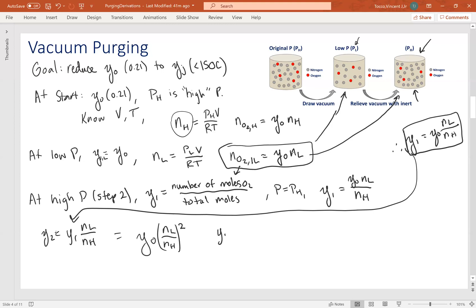We could then calculate that Yj, which is the oxygen concentration after J cycles, is equal to the initial oxygen concentration times the moles at low conditions over the moles at high conditions to the Jth power. And this equation will allow us to calculate what J is, how many cycles we need to lower the oxygen concentration to some level, given what our initial oxygen concentration is, and given what our pressure is.